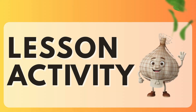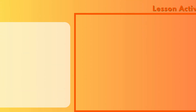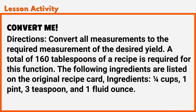Lesson activity: Convert me. Directions: Convert all measurements to the required measurement of the desired yield. A total of 160 tablespoons of a recipe is required for this function. The following ingredients are listed on the original recipe card: 1¼ cups, 1 pint, 3 teaspoons, and 1 fluid ounce.